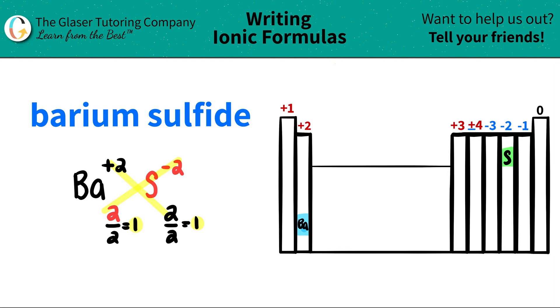So when I start naming this, the formula, I have barium. I'm going to say that I have one of them, so I don't have to write this 1 here. The next is S. I have one of those. I don't have to write the 1s. You can, but you don't have to. And that's the end. So barium sulfide is BAS.